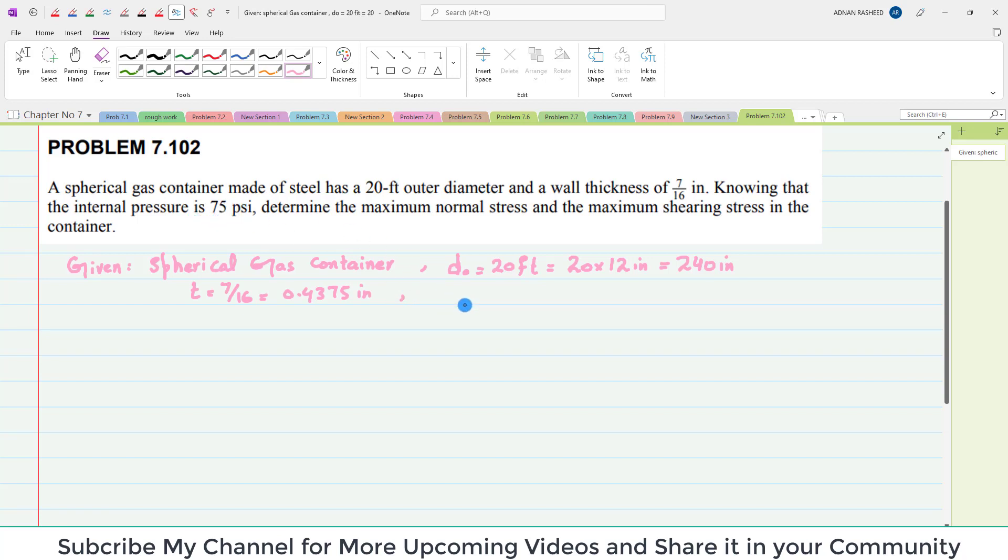Also, the internal pressure P equals 75 psi. What we have to find is the maximum normal stress.